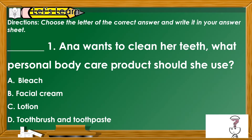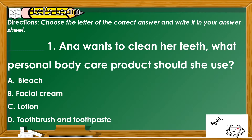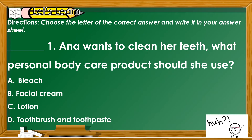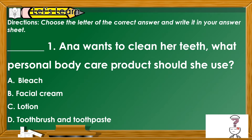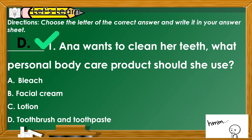Now, let's answer — let's learn. I will read the directions, so listen carefully. Choose the letter of the correct answer and write it in your answer sheet. Number 1: Anna wants to clean her teeth. What personal body care products should she use? A. Bleach, B. Facial cream, C. Lotion, or D. Toothbrush and toothpaste. The correct answer is Letter D.